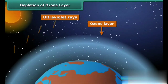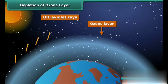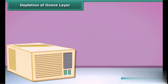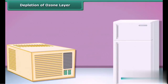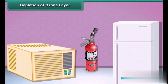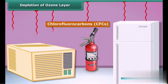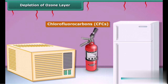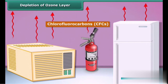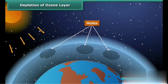Things like air conditioners, refrigerators, and fire extinguishers release chlorofluorocarbons — that is, CFCs — into the atmosphere, and create holes in the ozone layer.